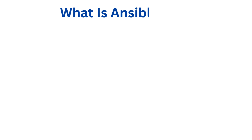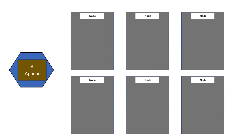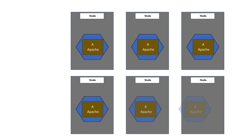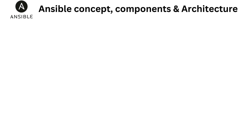What is Ansible? Ansible is a very simple and easy-to-use software that is used to automate and orchestrate IT tasks. A straightforward illustration of this concept: imagine you need to install and configure the Apache web server on 10 different nodes. By using Ansible, you can automate this process across all 10 nodes simultaneously, eliminating the need to manually configure each node one at a time, saving considerable time and effort.